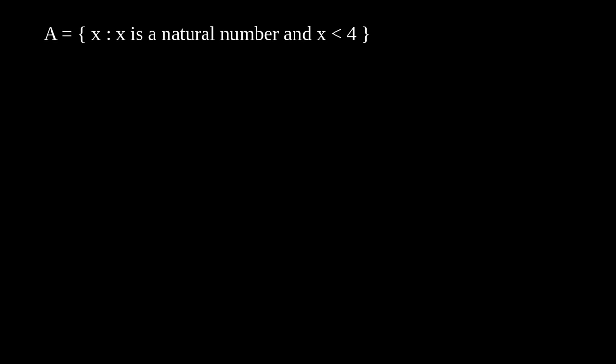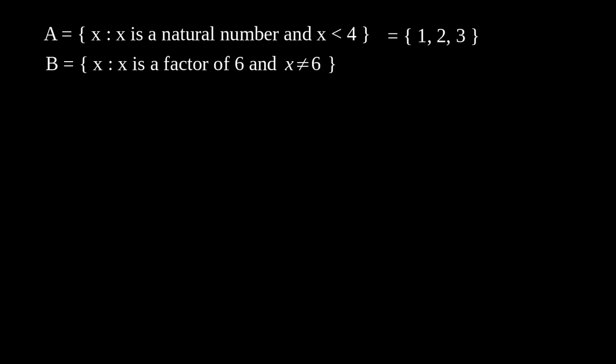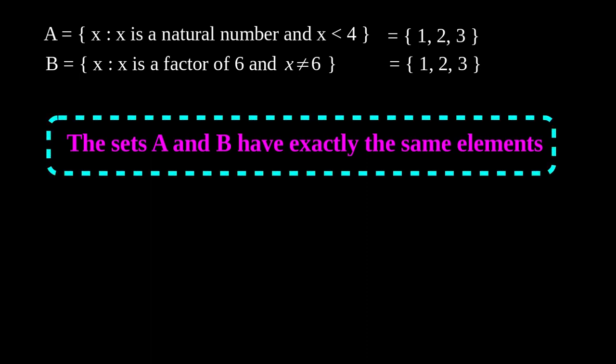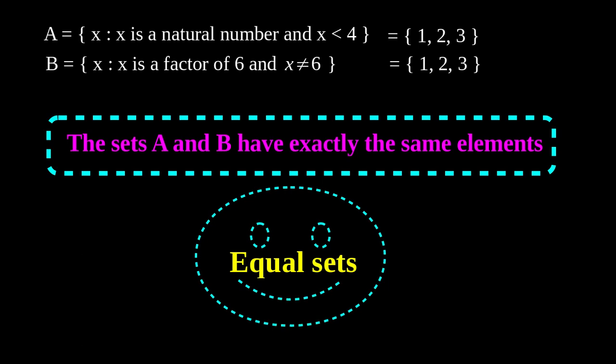Now the fifth type. Examples: A equals the set of all x such that x is a natural number and x less than 4, so A = {1, 2, 3}. B equals the set of all x such that x is a factor of 6 and x ≠ 6, so the remaining factors are 1, 2, and 3. A and B contain exactly the same elements, so we call them equal sets.